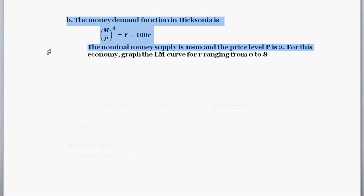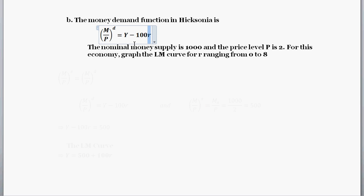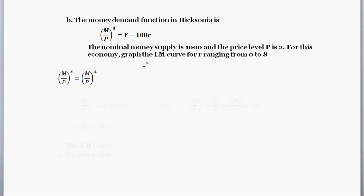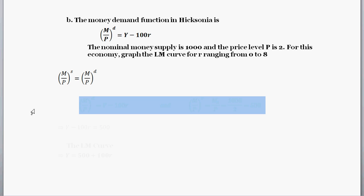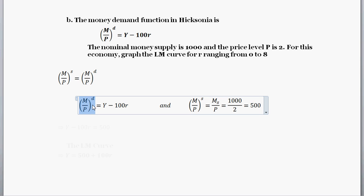Moving to part B, we're going to build the LM curve. We're given that money demand divided by prices — real money demand — equals output or income minus 100 times R. The nominal money supply is 1000 and the price level is 2. The LM curve tells us all combinations of interest rates and income such that the market for real money balances is in equilibrium. So we're going to set the supply of real money balances equal to the demand for real money balances. The demand for real money balances is given by that equation: real output minus 100 times R.